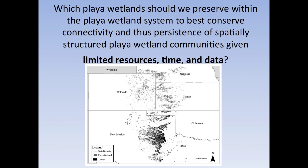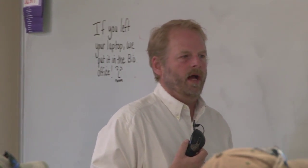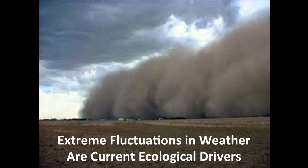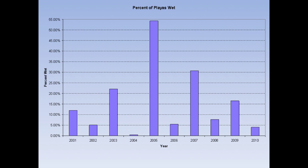Before I get to a systems approach, you have to remember that we don't control much about what goes on in the high plains. What drives a playa system are extreme fluctuations in weather, so there are tremendous amounts of variability across time and space in terms of wet or inundated playas. This graph shows the percent of inundated playas on the southern Great Plains during January from 2001 to 2010 — there's a great deal of variation.